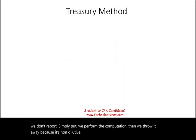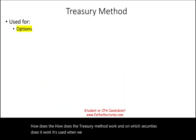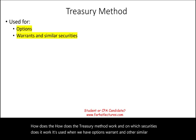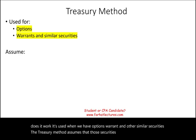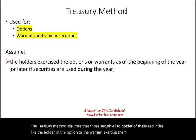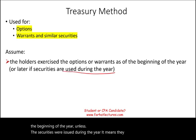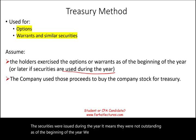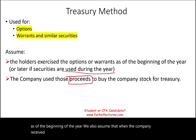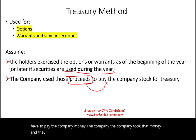How does the treasury method work, and on which securities does it apply? It's used when we have options, warrants, and other similar securities. The treasury method assumes that the holders of those securities exercise them as of the beginning of the year, unless the securities were issued during the year — meaning they were not outstanding as of January 1st. We also assume that when the company receives the proceeds — because when you exercise your option you pay the company money — the company takes that money and buys treasury stock on the open market.